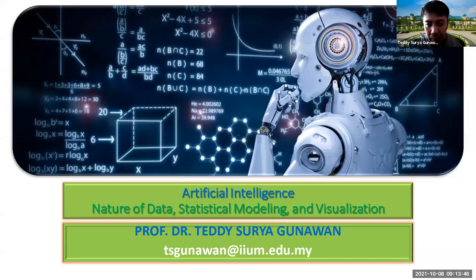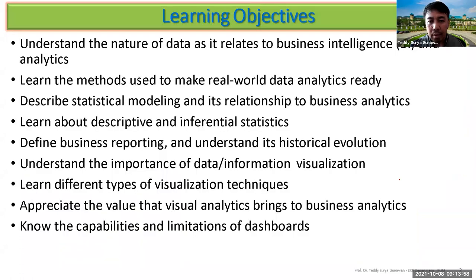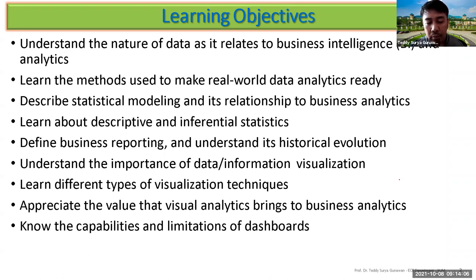We are moving now to the second part, which is the artificial intelligence nature of data, statistical modeling, and visualization. There are many learning outcomes for this chapter, but we just touch on it a bit because this is the supporting chapter. The main chapter will be on machine learning and deep learning.